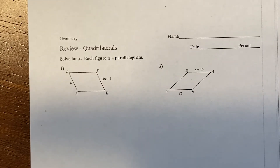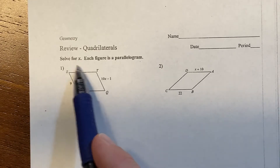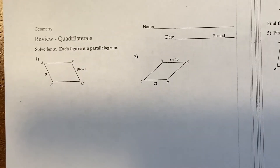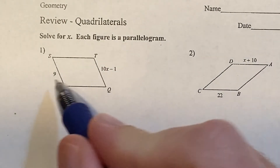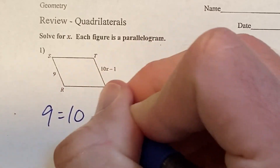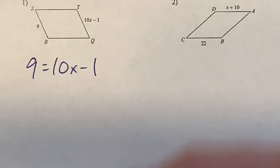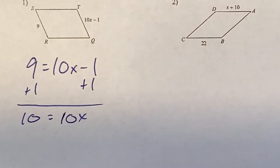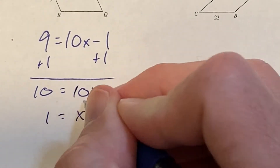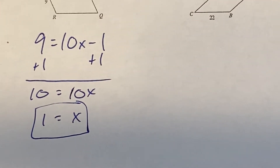Now find the review quadrilaterals sheet. We're given some parallelograms and asked to solve for x. In a parallelogram, opposite sides are congruent, so 9 equals 10x minus 1. Add 1 to both sides: 10x equals 10, divide by 10, x equals 1.